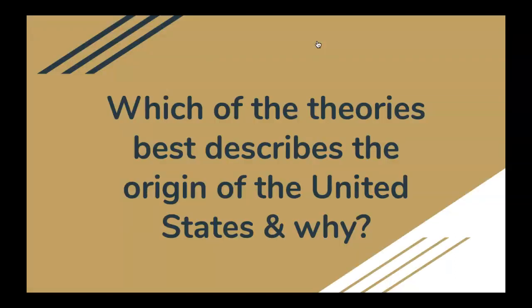Which of the theories best describes the origin of the United States and why? It might be obvious that the social contract theory is what actually sustains the United States model of government. We, the people, admit that we can't do it all ourselves — we need government to enact certain policies for a better lifestyle for all of us. The social contract theory is what basically describes the model of our current government in the United States.